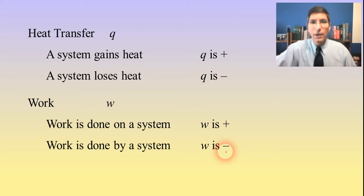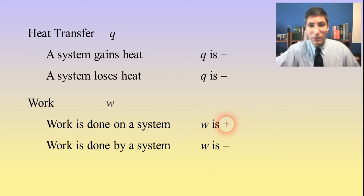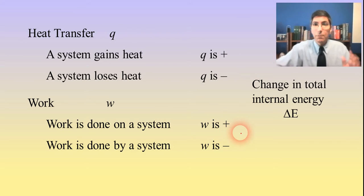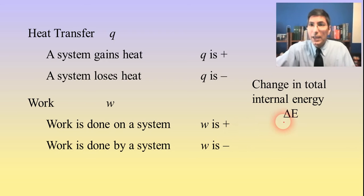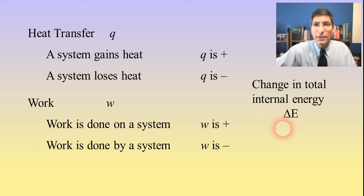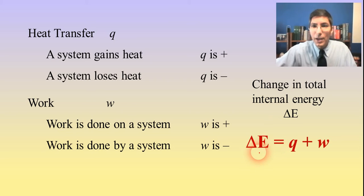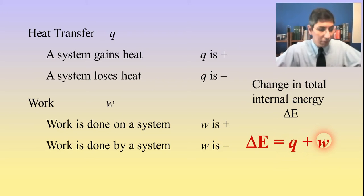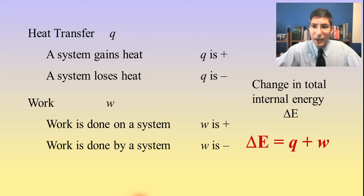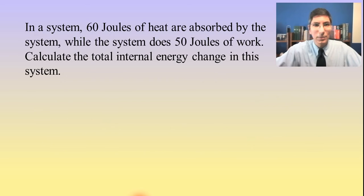When we say work: if it's done by the system, that's negative. Work done on the system, it's positive. We can take these two forms of energy and put them together. The change in total internal energy of a system is delta E, and that's found by taking Q and adding it to W.